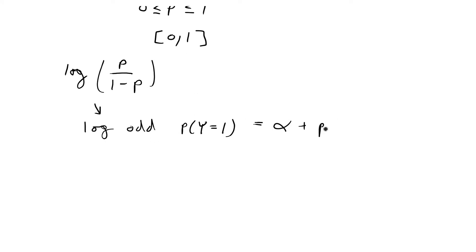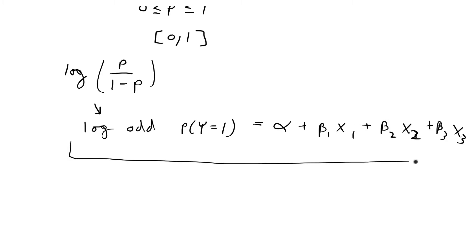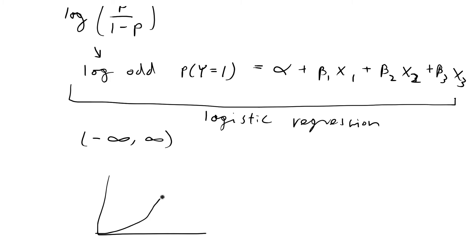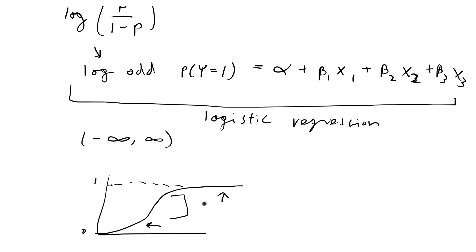The left-hand side equals a linear combination of the predictor variables, and this is the logistic regression model. Because the log odds of the probability that y equals 1 has the desired range of negative infinity to infinity, graphically the logistic model produces an S-shaped curve. If you have very large predictor values, the linear combination approaches 1, predicting probabilities close to 1. If you have very small values, it predicts probabilities approaching 0, with various probabilities in between.